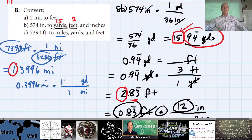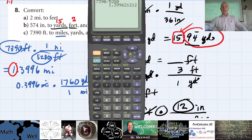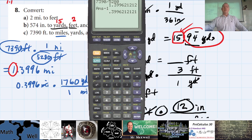1,760 yards per mile — correct. Miles divide out and we're left with yards. On the calculator, subtract 1 from the previous answer to get just the decimal, then multiply by 1,760.